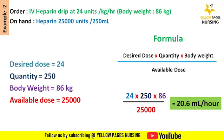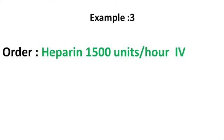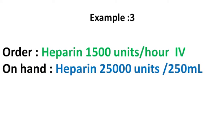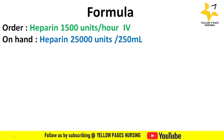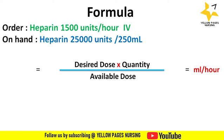The difference between the first and second example is that we converted the body weight from lbs to kilogram in the first example, whereas in the second example it is given in kilogram and we applied it directly. Now the third example: doctor's order is heparin 1,500 units per hour IV, on hand is heparin 25,000 units per 250 ml. What will be the infusion rate set on the infusion pump? Here we need a different formula — desired dose multiplied by quantity divided by available dose — because the doctor's order is in units per hour, not units per kg per hour.